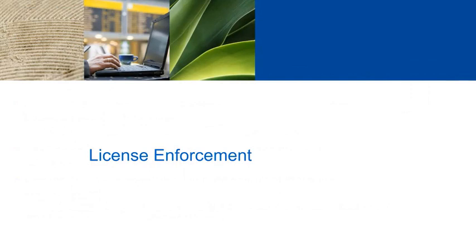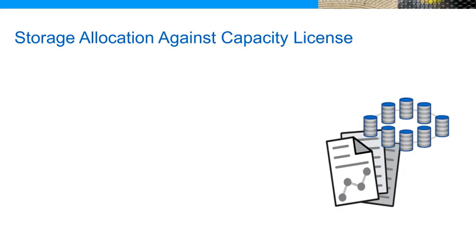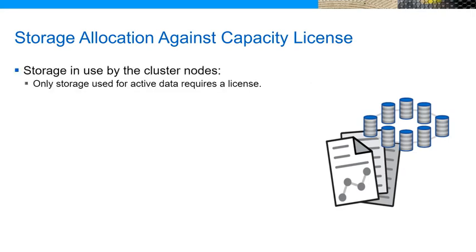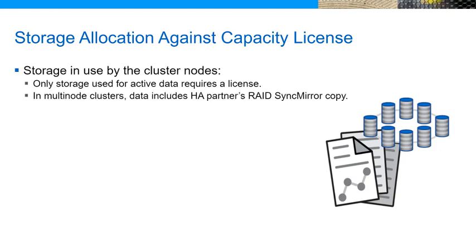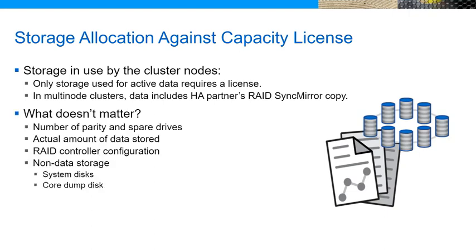License enforcement: Understanding how ONTAP Select enforces license capacity and duration is important. Capacity leases need to cover only the disk size of the data aggregates. For multi-node clusters, the license for each node must also include the space for the RAID sink mirror copy that the node HA partner stores. Note that the actual amount of managed storage is not relevant when sizing a capacity license. Factors such as storage efficiencies distort the amount of storage that is used. Every time ONTAP Select is requested to modify the space that the aggregate requires, the updated storage allocation is tested against the pool's available capacity. The license manager instance approves the operation only if sufficient space is available; otherwise, the aggregate operation fails. This will prevent an aggregate from losing a valid lease.